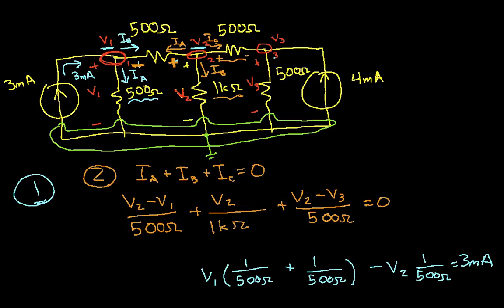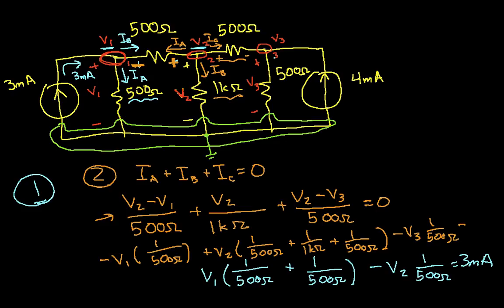And so I can do the same thing here with this equation that I did with my equation for node 1, and write it as minus V1, 1 over 500 ohms, plus V2, 1 over 500 ohms plus 1 over 1k ohm plus 1 over 500 ohms, minus V3, 1 over 500 ohms, and this equals zero.